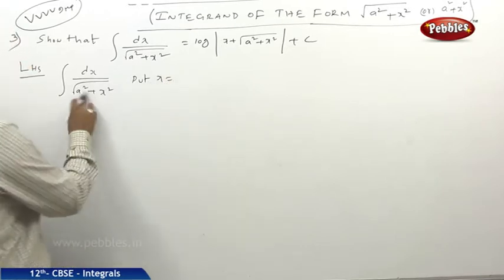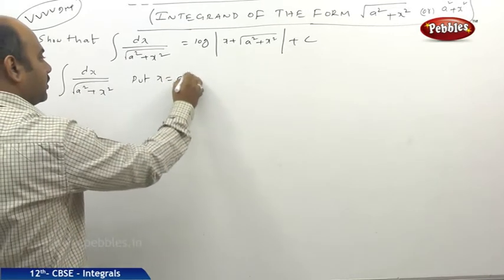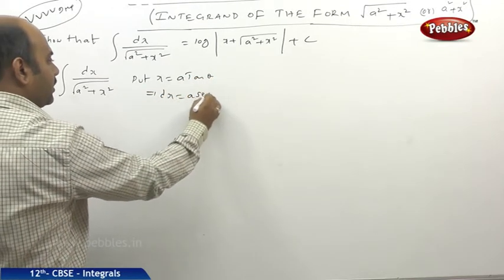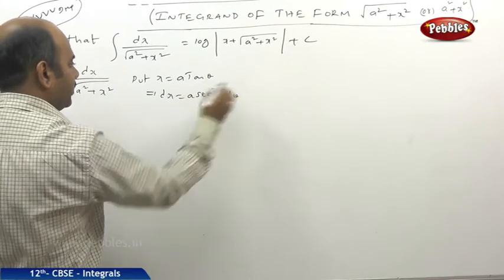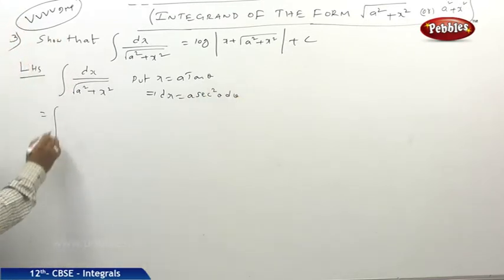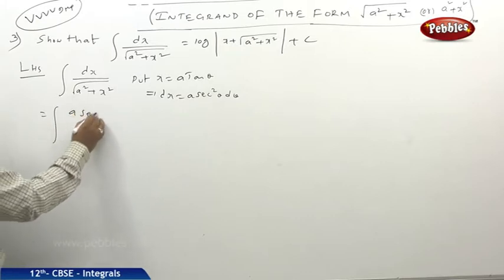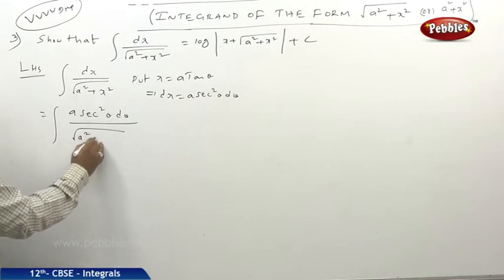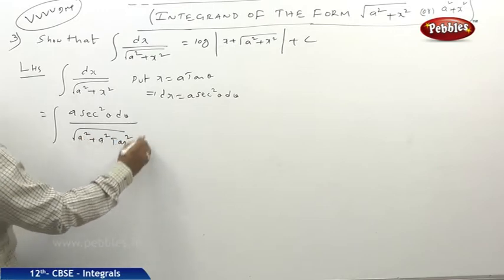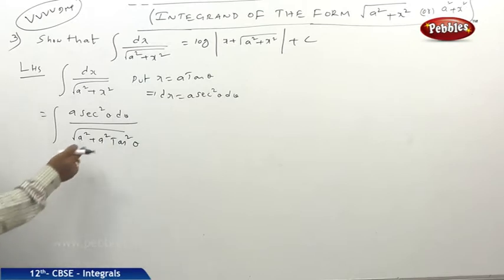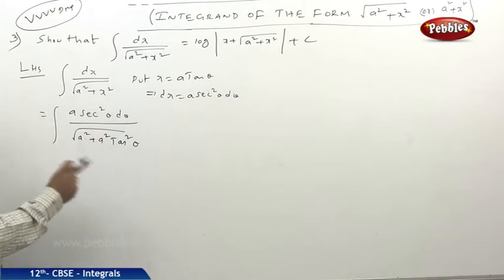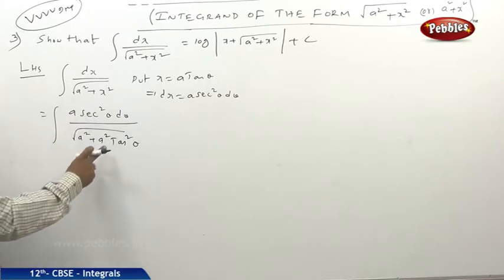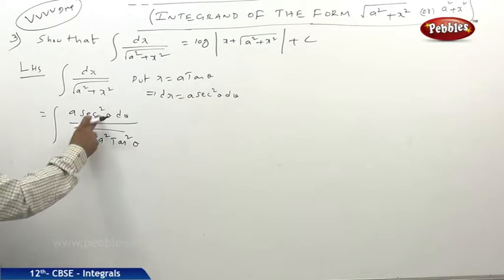Put x equal to a tan θ whenever a² plus x² is given. Then dx becomes a sec²θ dθ. This turns to: a sec²θ dθ divided by under root of (a² plus a² tan²θ). Taking a² outside the root, 1 plus tan²θ equals sec²θ, but the root is there, so it becomes a sec θ.